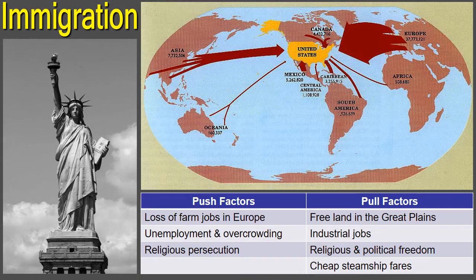The negative forces driving Europeans to emigrate in the late 19th century included: Number one, the poverty of displaced farm workers driven from the land by the mechanization of farm work — more machines means less jobs. Number two, overcrowding and joblessness in European cities as a result of a population boom. Number three, religious persecution, such as that of the Jewish pogroms in Russia. A pogrom is an organized massacre of helpless people — in this case, the Jews.